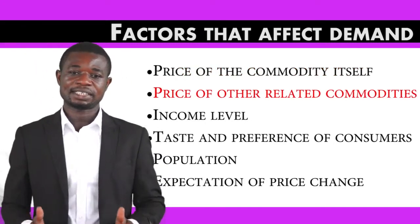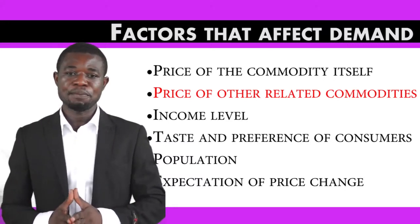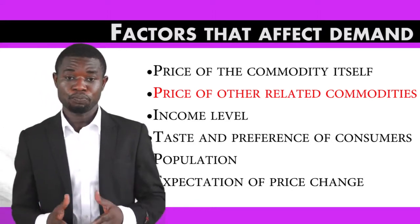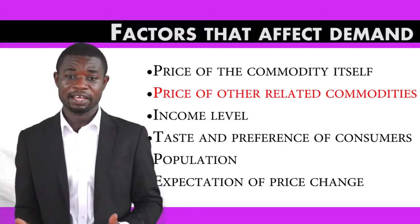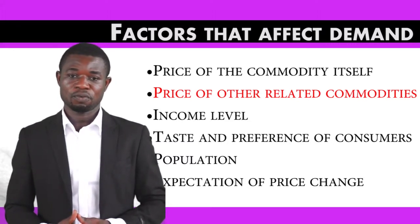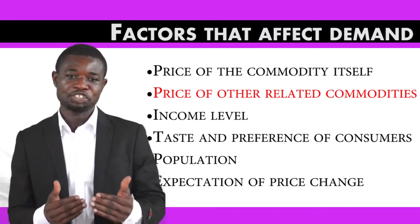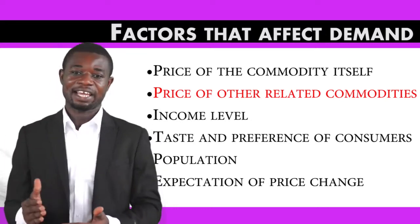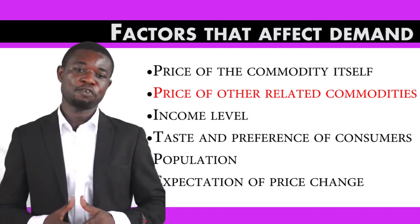Another factor is the price of other related commodities. For instance, if you are buying Milo, the price of Bon Vita can also affect the quantity of Milo you buy, because Milo and Bon Vita are substitutes — they serve the same purpose. If the price of Bon Vita is high, consumers will shift from buying Bon Vita and buy more Milo, increasing the quantity demanded for Milo.